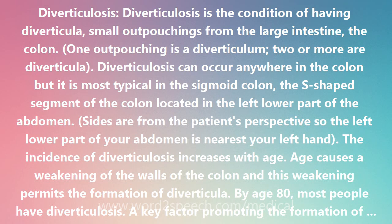The incidence of diverticulosis increases with age. Age causes a weakening of the walls of the colon, and this weakening permits the formation of diverticula. By age 80, most people have diverticulosis. A key factor promoting the formation of diverticulosis is elevated pressure within the colon, which is raised when a person is constipated and has to push down to pass small hard bits of stool.